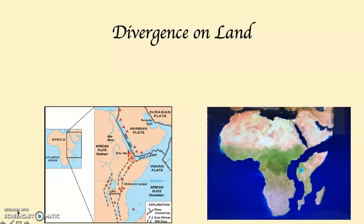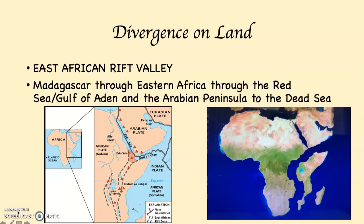Divergence also happens on land. The most famous place is in eastern Africa — the East African Rift Valley — which stretches from Madagascar in the south, through eastern Africa, up through the Red Sea and Gulf of Aden, to the west of the Arabian Peninsula, and then up to the Dead Sea. Over the next 50 million years or so, this entire eastern side of Africa is going to break off and go out into the Indian Ocean.